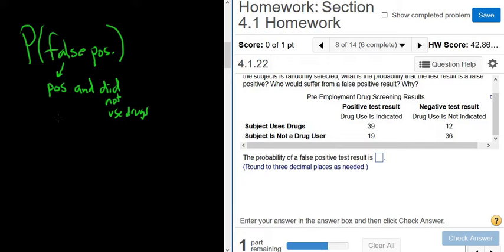If you took a lie detector, it would mean that the test says you're lying, but you're not really lying. So it's a positive result that's false. So positive, in this case, means the test says the person is using drugs, and the person did not actually use drugs.